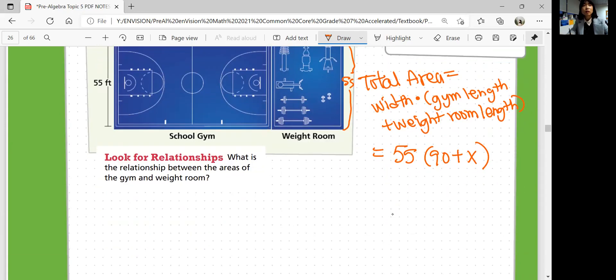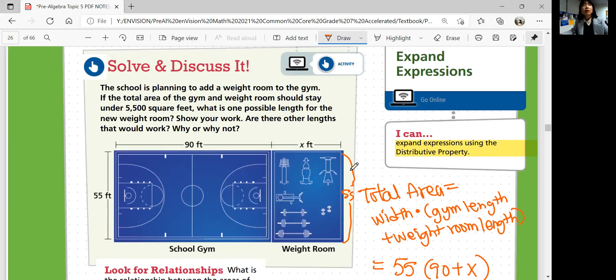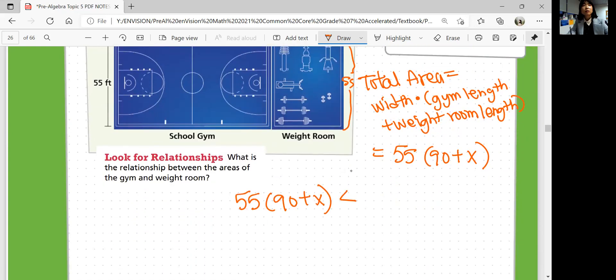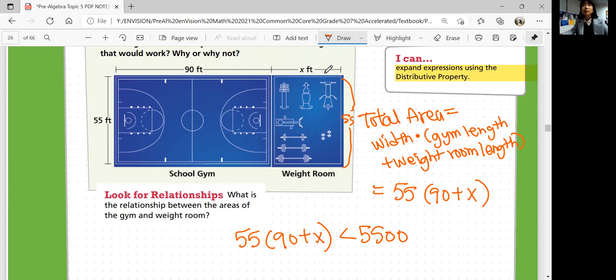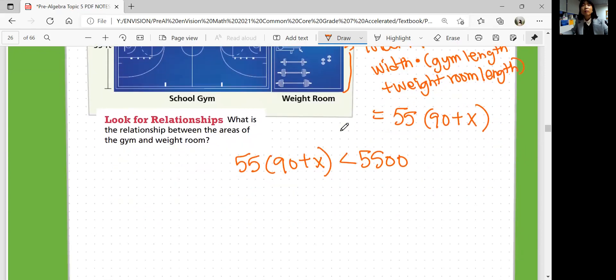And you can figure out an answer by substituting values that can make an area under, so less than 5,500 feet. So you can start putting in numbers - does 20 work, does 15 work, does 10 work, does 5 work. You can figure out a length that works.